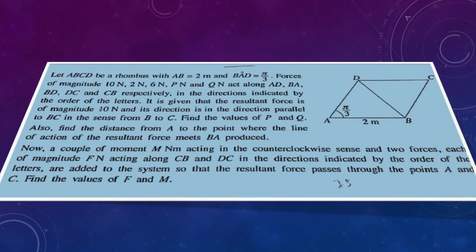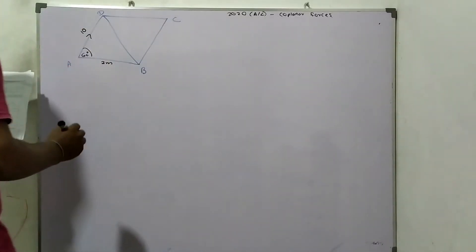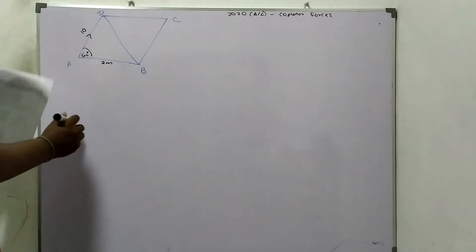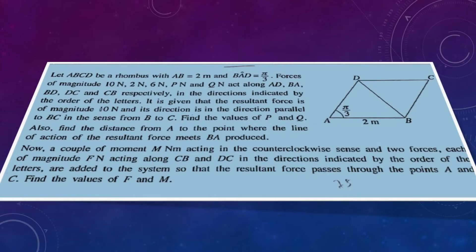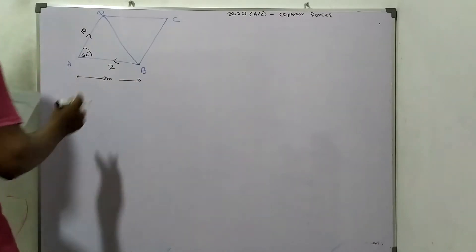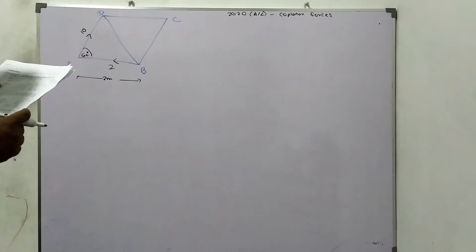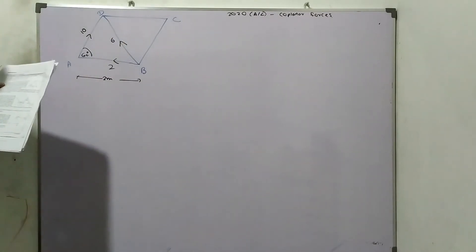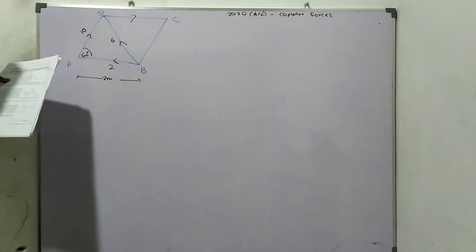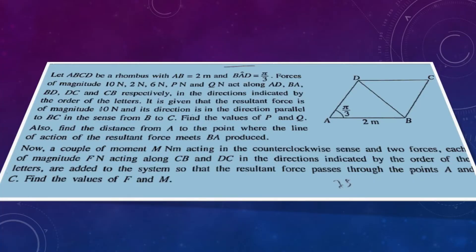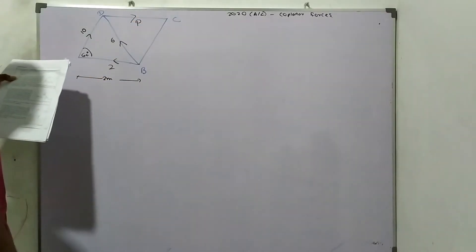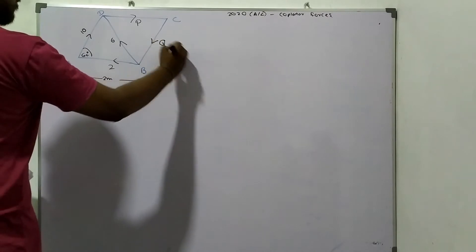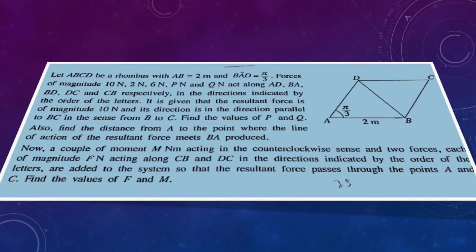This is my rhombus ABCD with AB equal to 2 meters and angle BAD pi over 3. The forces of magnitude: 10 newtons acting along AD, 10 newtons along BA, 2 newtons along BD, 6 newtons along DC, 3 newtons along DC, and Q newtons along CB.